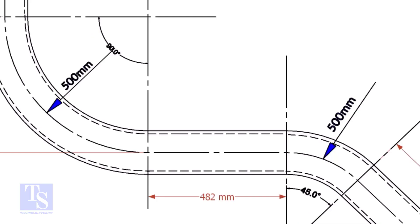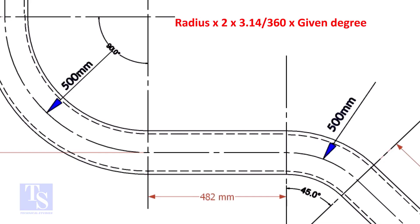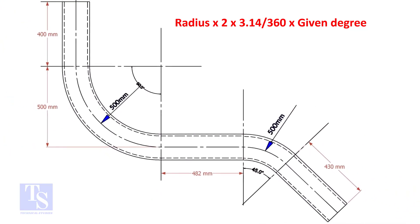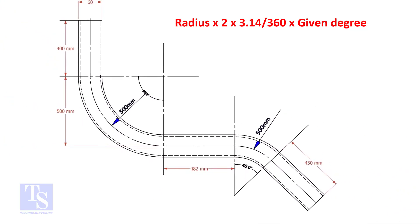Let us calculate the pipe length for the 90 degree bend. The formula is: radius multiplied by 2, multiplied by 3.14, divided by 360, multiplied by the required degree.